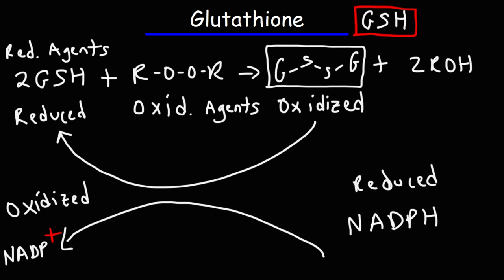And so glutathione can be recycled in the body. It's an antioxidant and protects the cells from organic peroxides and free radicals. But it can be recharged using NADPH.